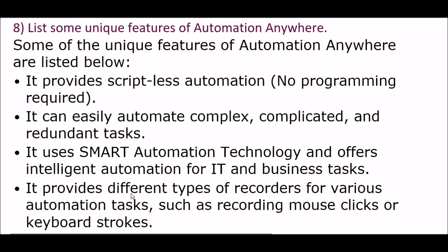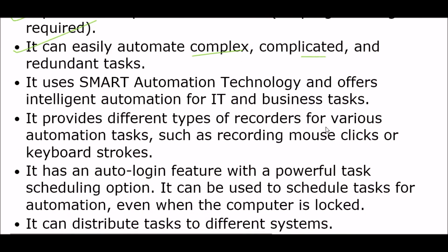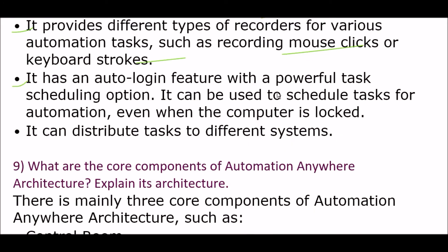Next question: list some unique features of Automation Anywhere. First, it provides scriptless automation — no programming is required. Next, it can easily automate complex and redundant tasks. It uses smart automation technology and offers intelligent automation for IT and business tasks. It provides different types of recorders for various automation tasks such as recording mouse clicks or keyboard strokes. It has an auto-login feature with a powerful task scheduling option, allowing tasks to be scheduled even when the computer is locked. It can also distribute tasks to different systems.